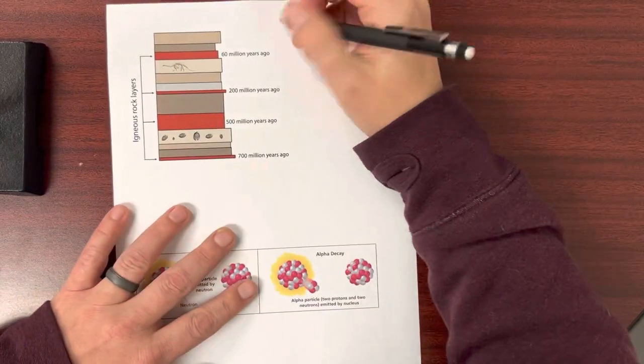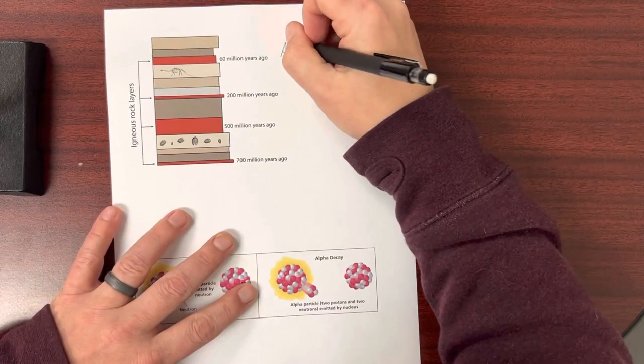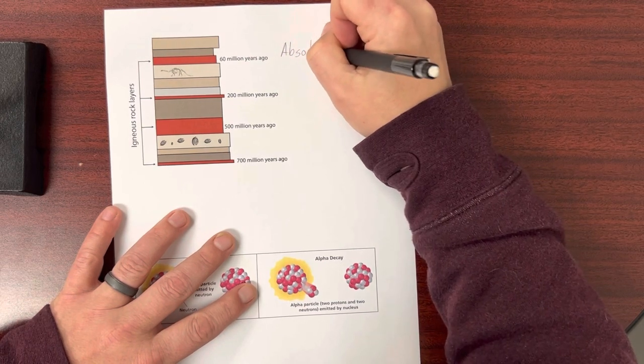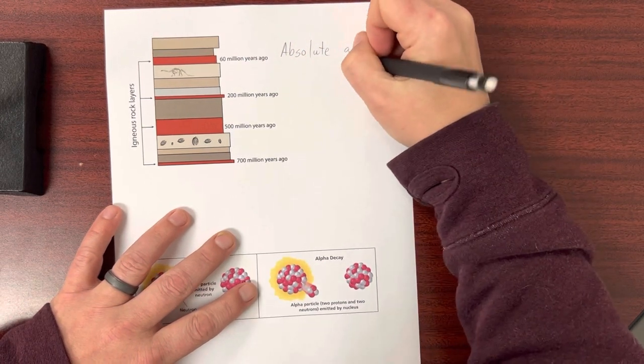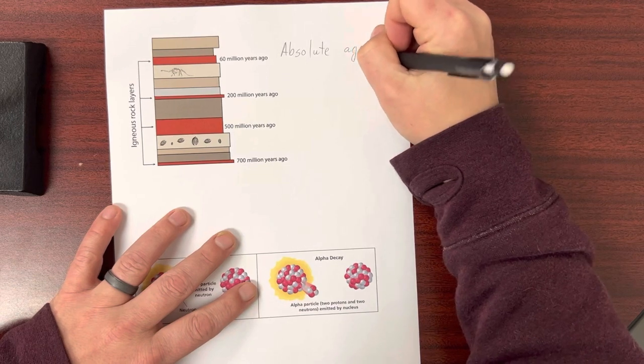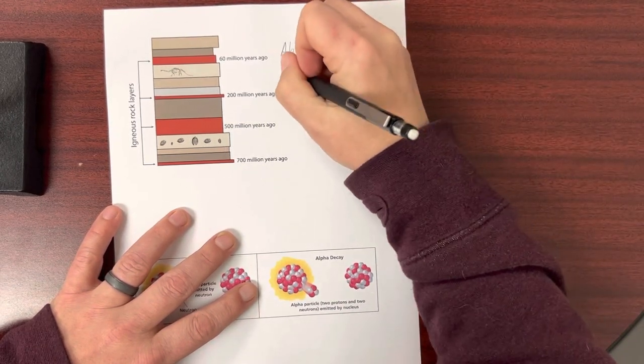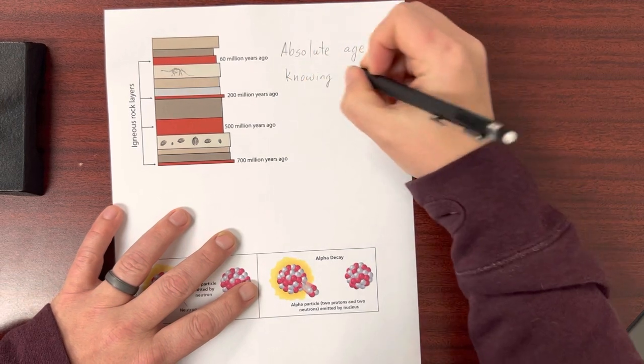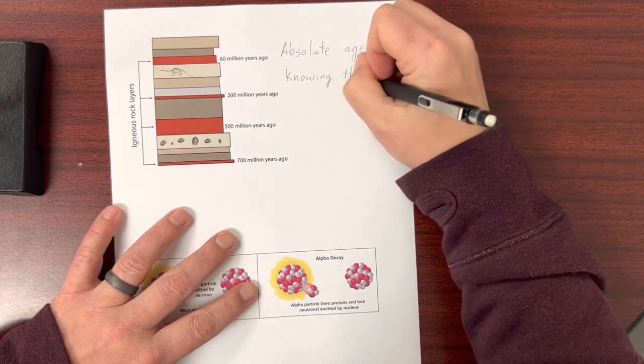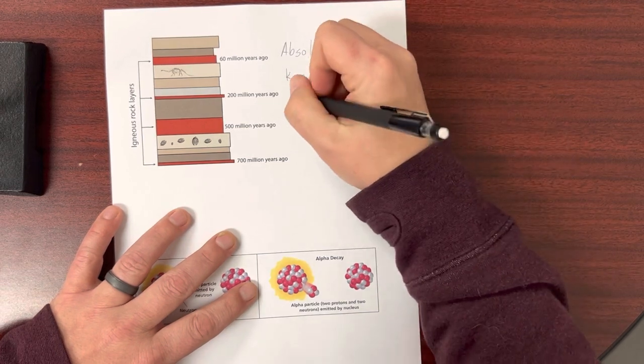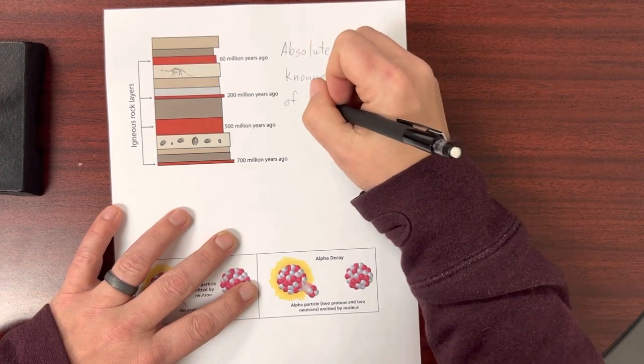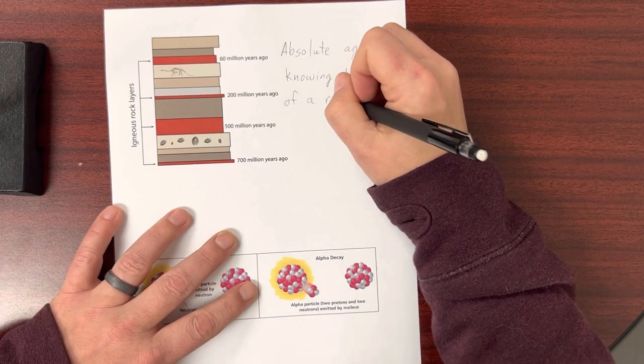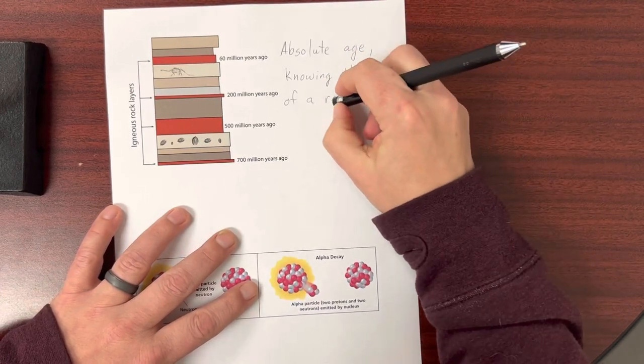So going a little bit further with more advanced techniques, we started to be able to figure out how old rock layers were. And you come up with something called absolute age. Absolute age just means we know the age of a certain layer of rock, and we can date it pretty accurately.